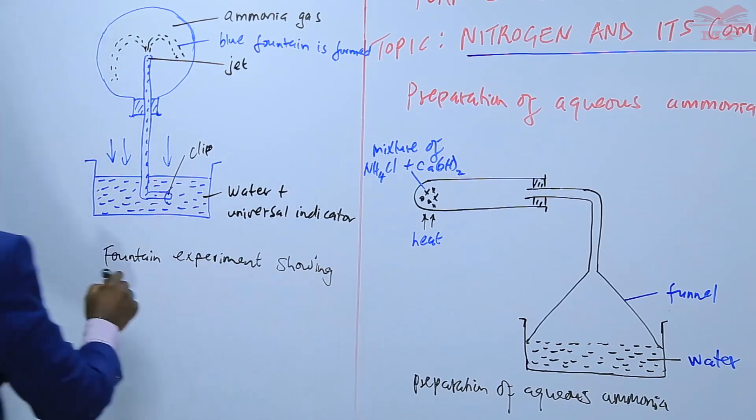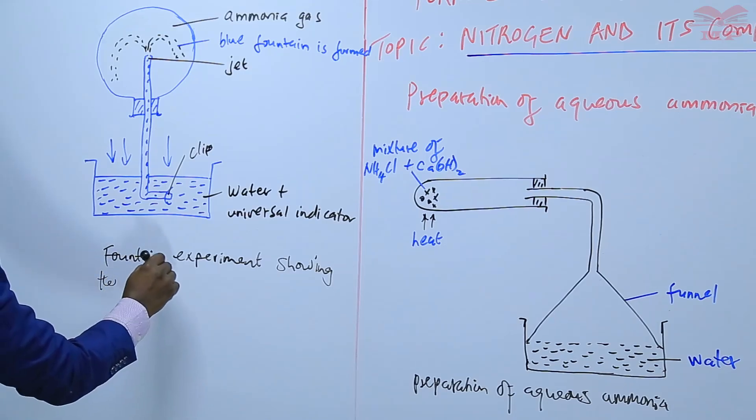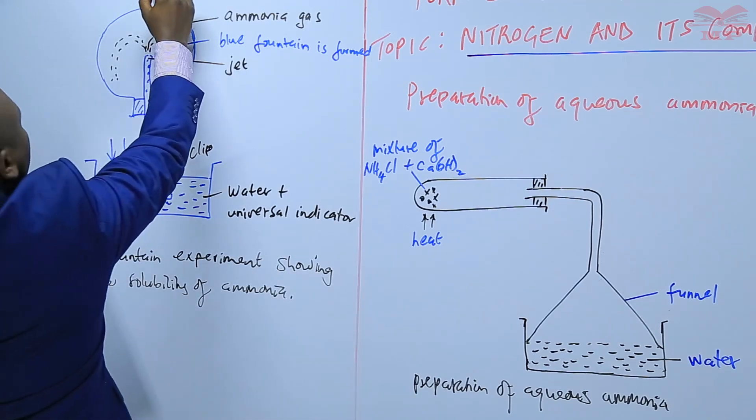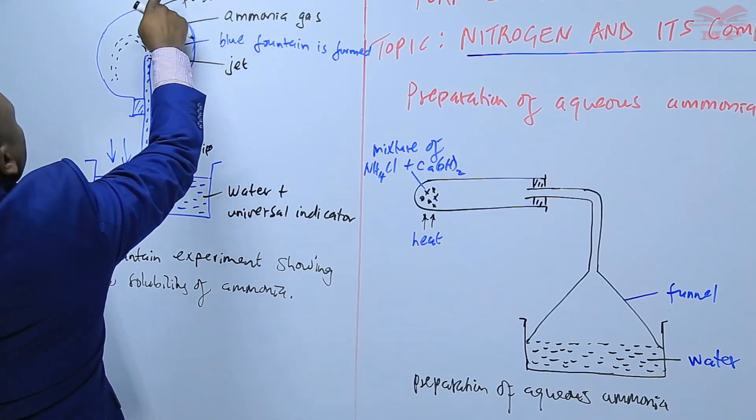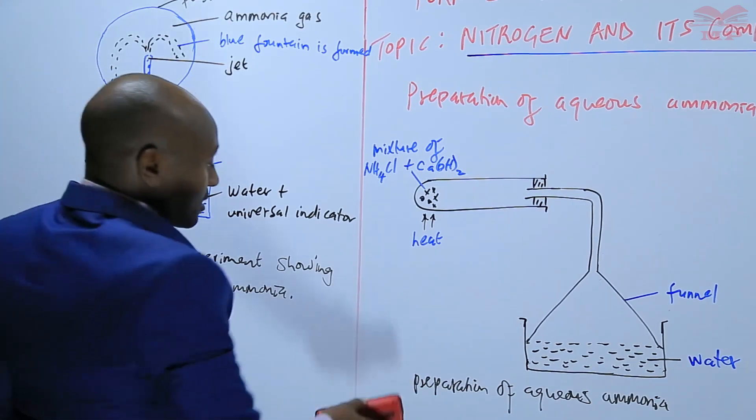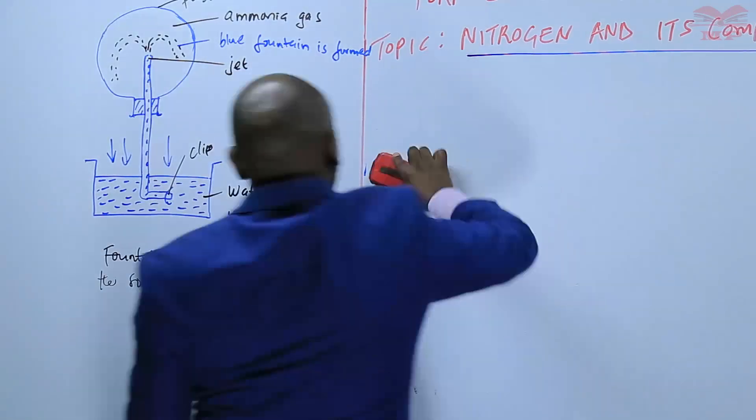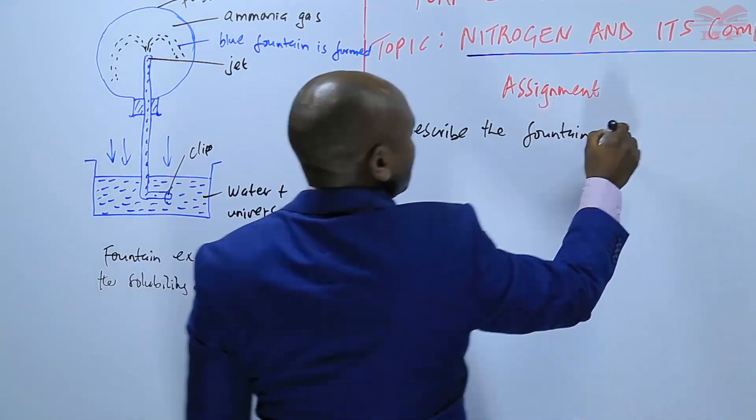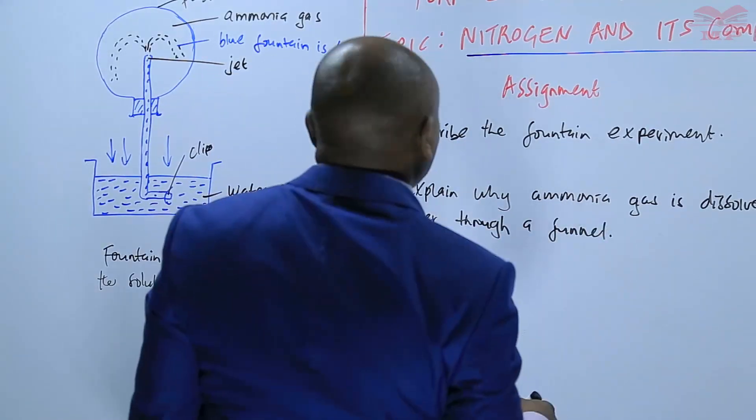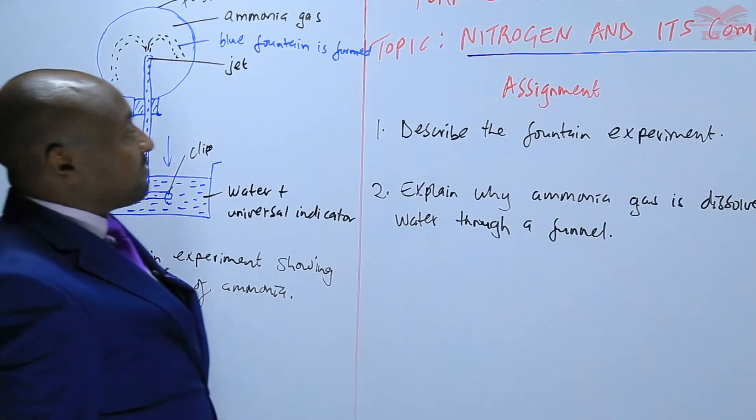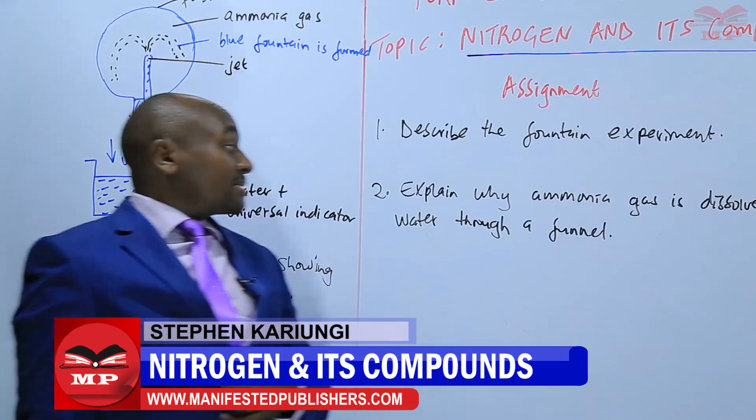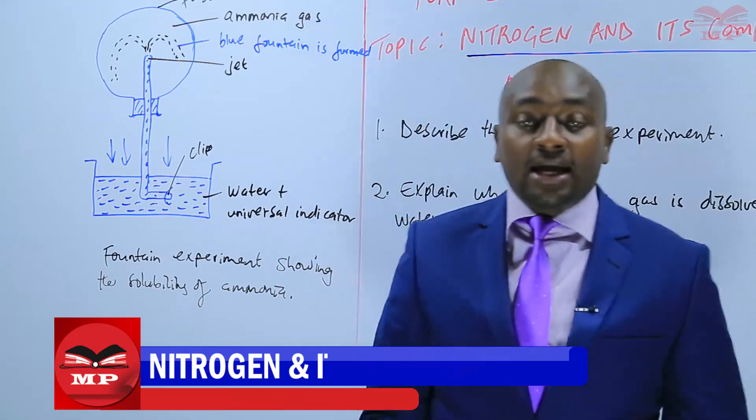This shows the solubility of ammonia in the flask. So that is as far as the preparation of aqueous ammonia is concerned. So the two questions in the assignment: describe the fountain experiment as we have done, and explain why ammonia gas is dissolved in water through a funnel. We'll stop there until next time. Goodbye.